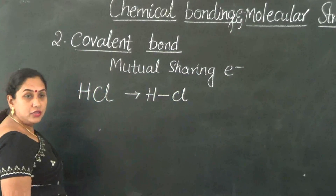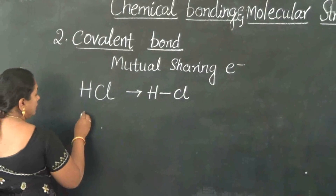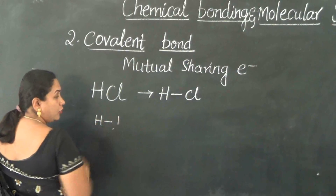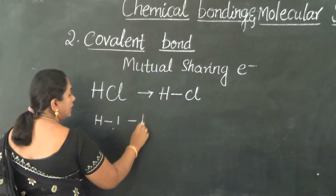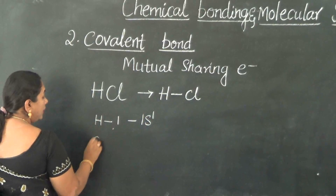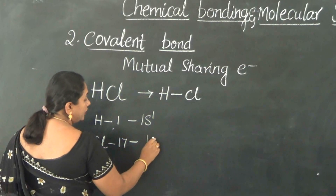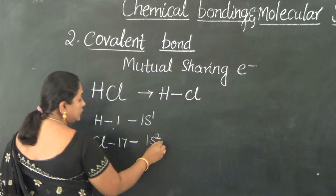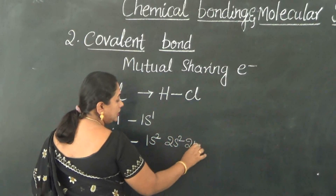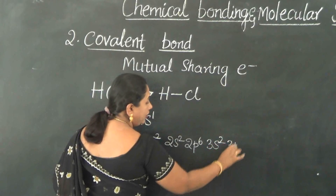Let us write the Lewis electron dot structure and go in for a proper analysis. Hydrogen has atomic number 1 and its electronic configuration is 1s1. Similarly, the atomic number of chlorine is 17, and its electronic configuration is 1s2, 2s2, 2p6, 3s2, and 3p5.